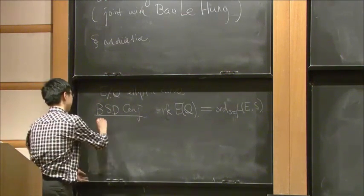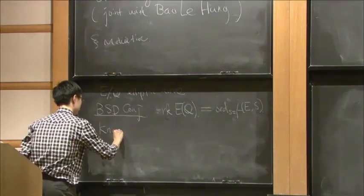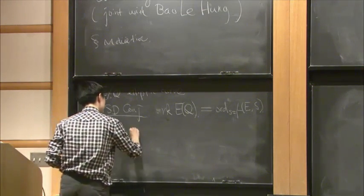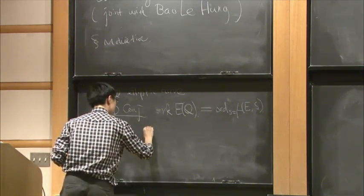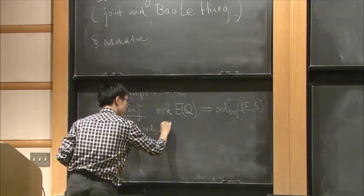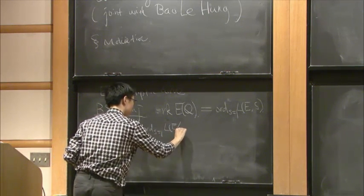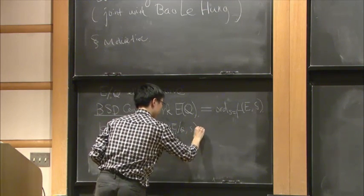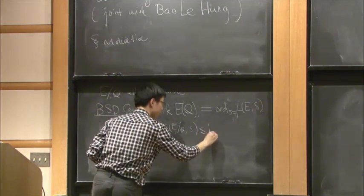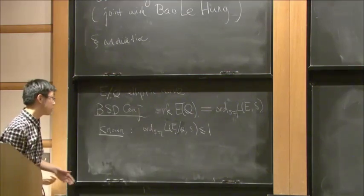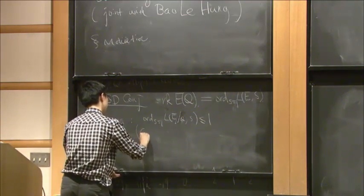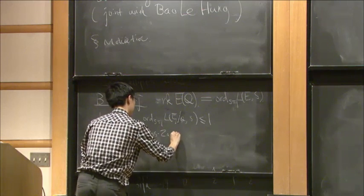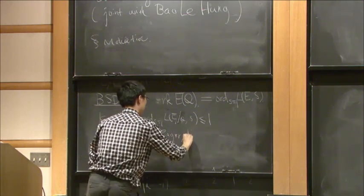This remarkable conjecture is known as long as the analytic rank is at most 1, due to the work of Gross-Zagier and Kolyvagin.